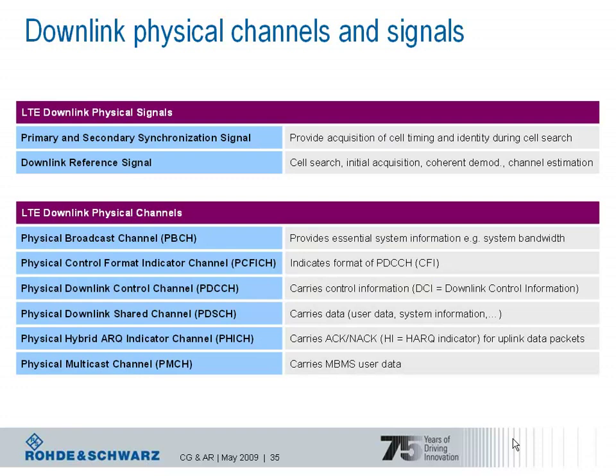LTE uses two types of signals in the downlink. First, signals which are purely generated in layer 1, the physical layer — these are the primary and secondary synchronization signals as well as downlink reference signals. Second, LTE uses physical channels which carry information data transported from higher layers, layer 2 and layer 3.